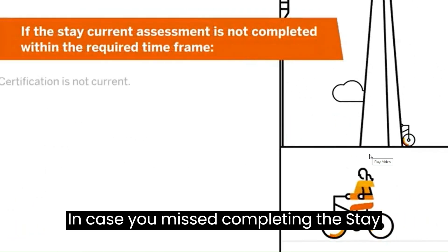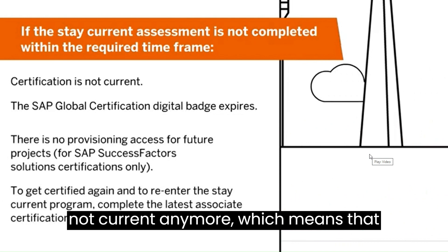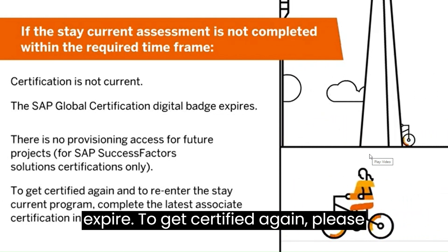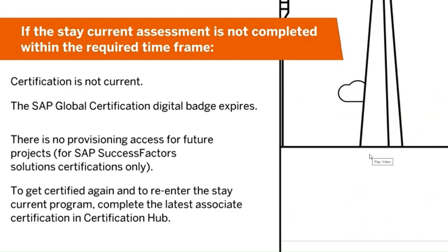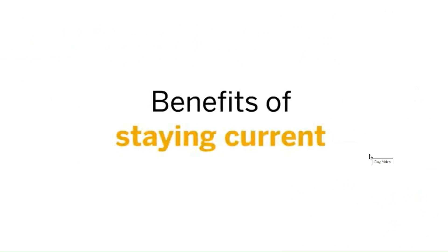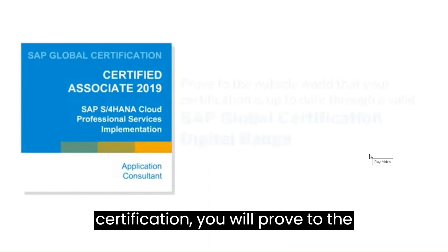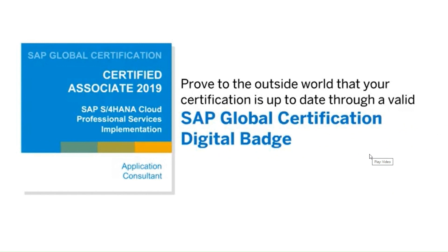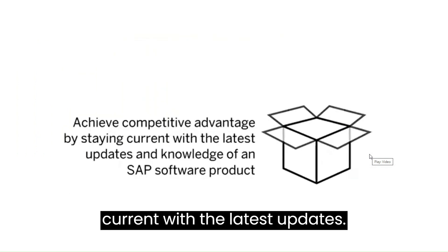In case you missed completing the stay current assessment, your certification is not current anymore, which means that your SAP Global Digital badge will expire. To get certified again, please complete the latest associate certification. If you stay current with your SAP Global Certification, you will prove to the outside world that you're up to date.